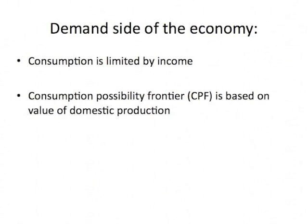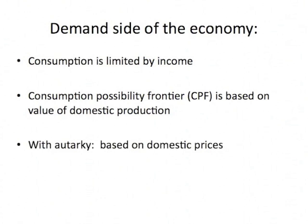We're going to take the amount that's produced and evaluate it at different prices to give the national income, the GMP. In autarky, the prices are going to be based on the purely domestic economy — how much you can afford is going to be based on what your domestic prices are.